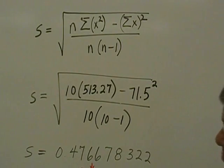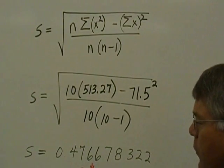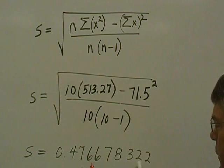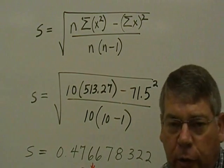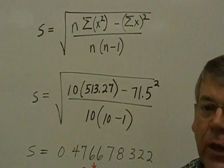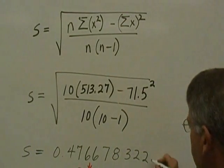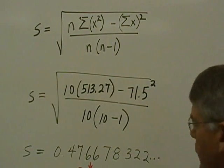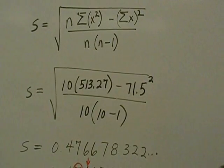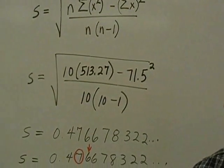Okay, the answer that we got from our calculator was 0.476678322. And, of course, since this is a square root value, we realize this is most likely an irrational number that goes forever and ever and ever. And so we're going to need to round this answer to a more meaningful amount.